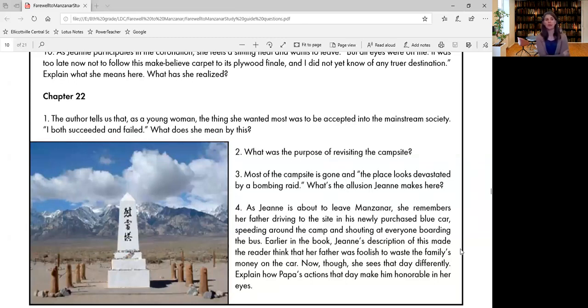Question two, what was the purpose of revisiting the campsite? So we get into part three of the book here, and this is where she's an adult and she is going back to visit Manzanar. Why? What is her purpose? What is her reason for going?